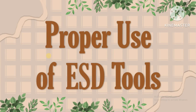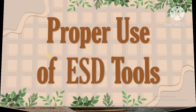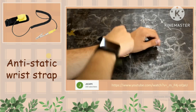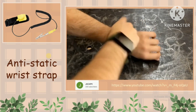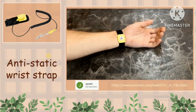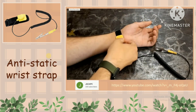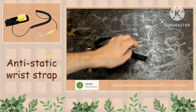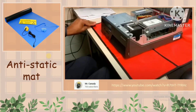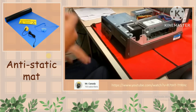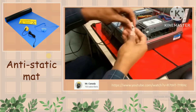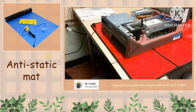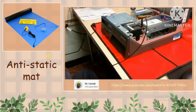Proper use of ESD tools. Wear the anti-static wrist strap with the metal touching your skin at all times. Attach the alligator clip to the grounding point. Place the anti-static mat on the workspace next to or under the computer case. Unplug the computer and attach the alligator clip on the metal chassis of the computer.